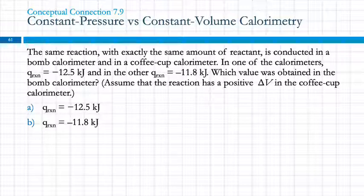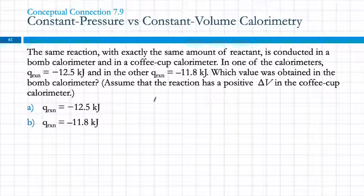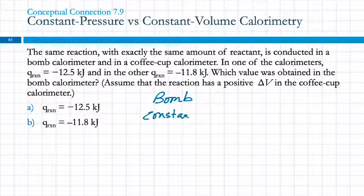So, we don't really need to do a calculation, but we do need to think about what's the difference between the coffee cup and the bomb calorimeters. So, in the bomb calorimeter, this is at constant volume. And the coffee cup is at constant pressure.